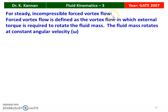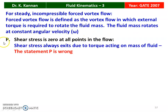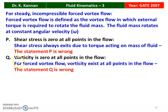For steady incompressible forced vortex flow, the vortex flow is defined as the flow in which external torque is required to rotate the fluid mass, and the fluid mass rotates at a constant angular velocity omega. Statement P says shear stress is zero at all points — this is incorrect because shear stress always exists due to the torque acting on the fluid mass. Statement Q says vorticity is zero at all points — this is also incorrect because for forced vortex flow, vorticity exists at all points since the flow is rotating.